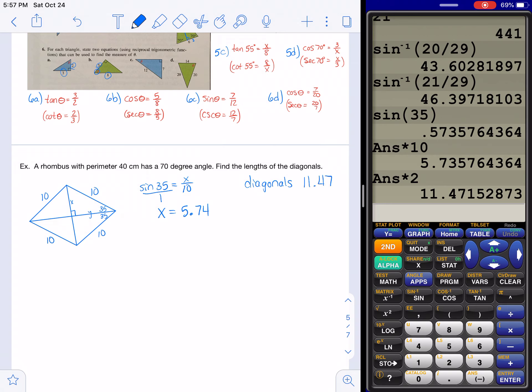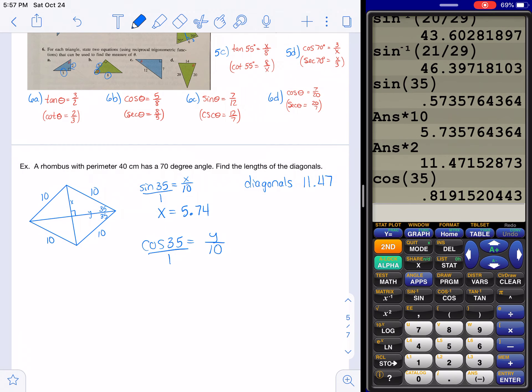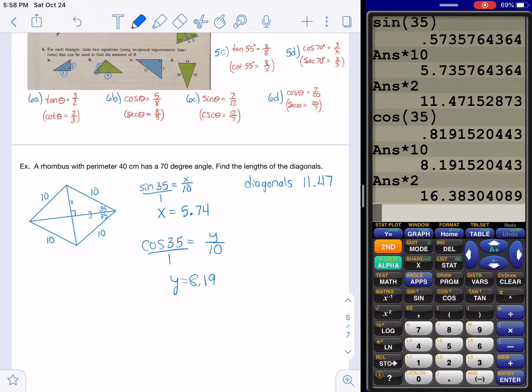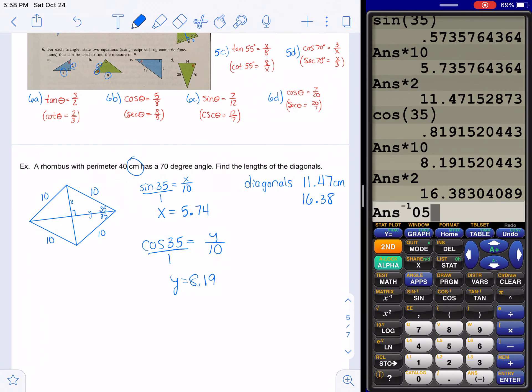And then you can do something very similar for y. We'll use the cosine, though, this time. Cosine of 35 would be y over 10. So then when you cross-multiply, you need to take the cosine of 35 and then multiply it by 10. And so y is 8.19. And if you double that, the other diagonal would be 16.38. And you should always try to label, too. If you're given units, then use those units. So those would each be centimeters.